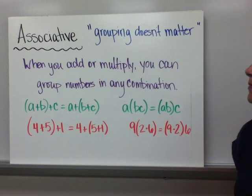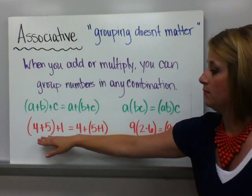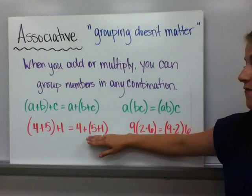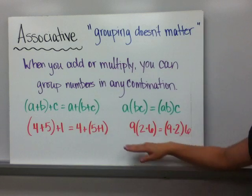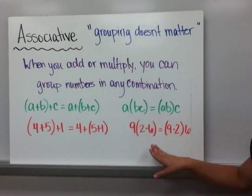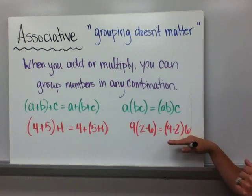Put some real numbers in there. In parentheses, 4 plus 5 plus 1 is the same thing as if I have the 5 plus 1 in parentheses and then add the 4. And then in multiplying, 9 times 2 times 6, I can multiply the 2 and the 6 together with that grouping symbol or I can have it grouped over here.